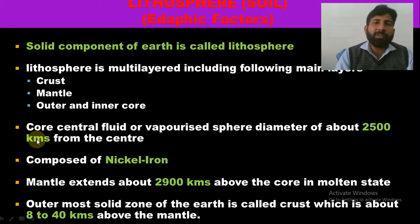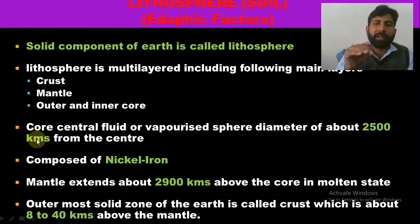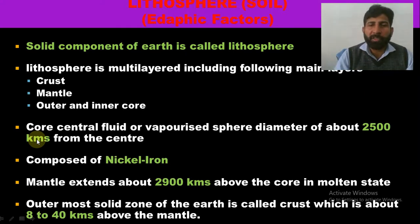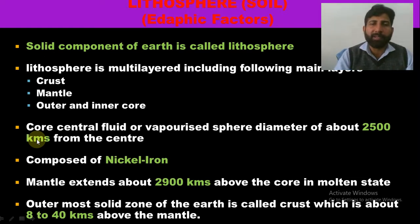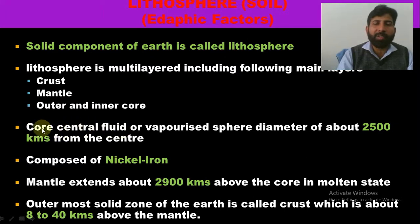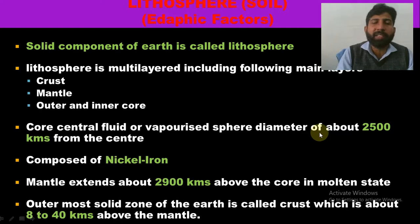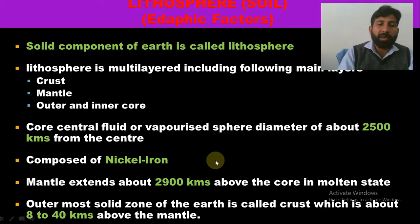The solid components of the Earth are called the lithosphere. It is a multilayered structure consisting of the crust, mantle, and outer and inner core as the three main components. The core is at the center — a fluid sphere with a diameter of about 2500 km from the center, composed of nickel and iron metal in the molten state, extending about 2900 km over the core.